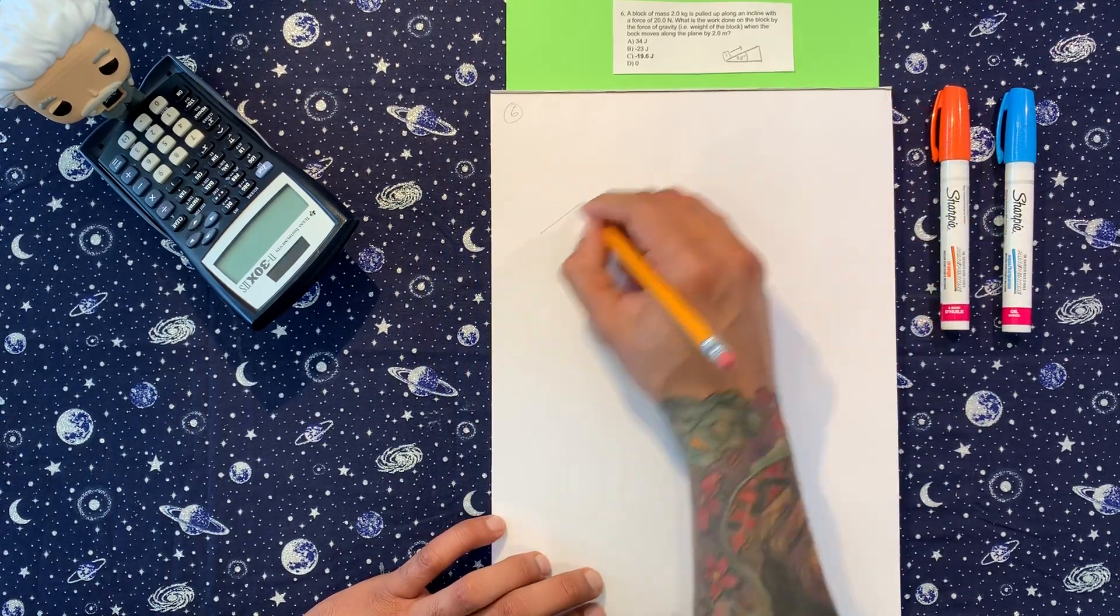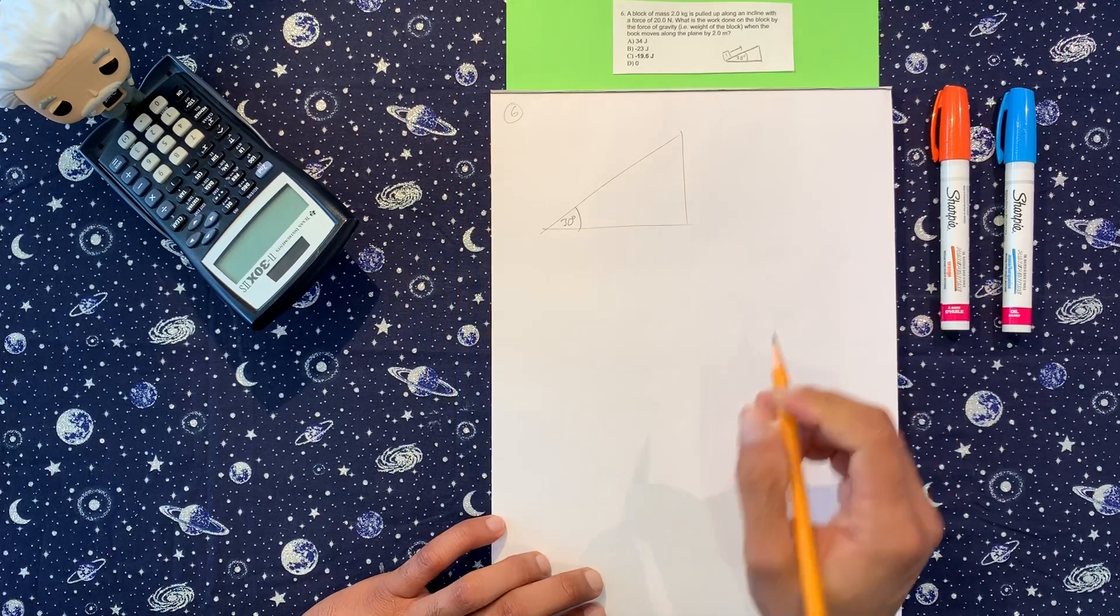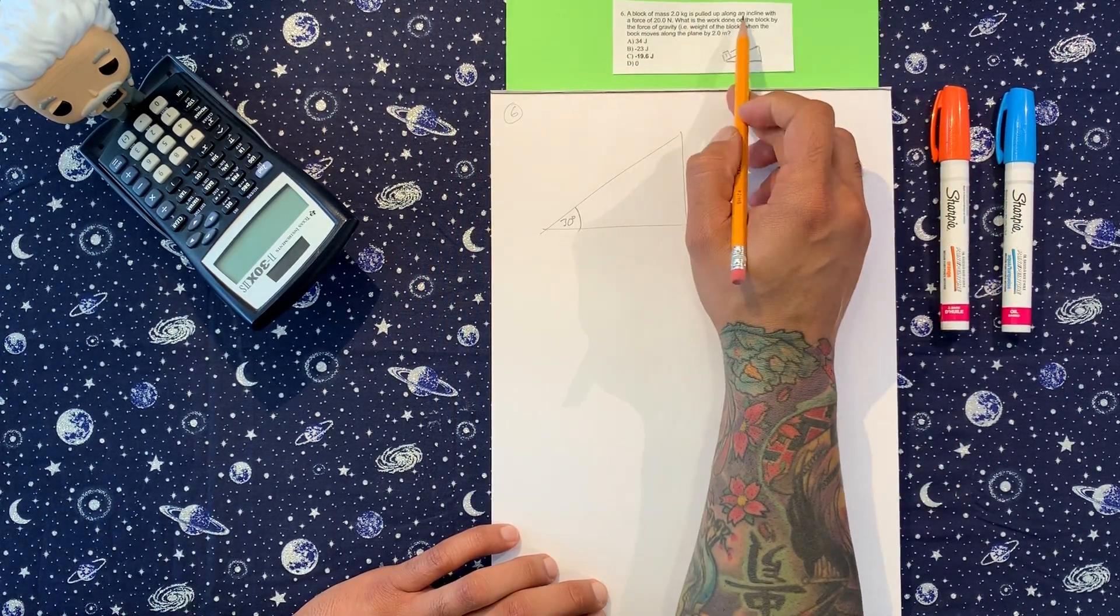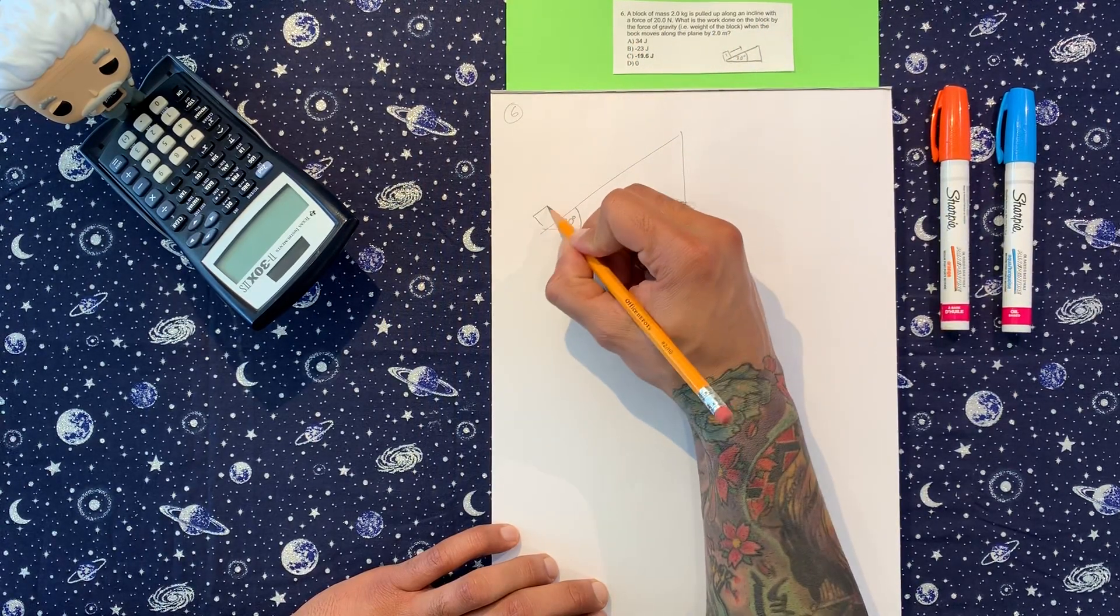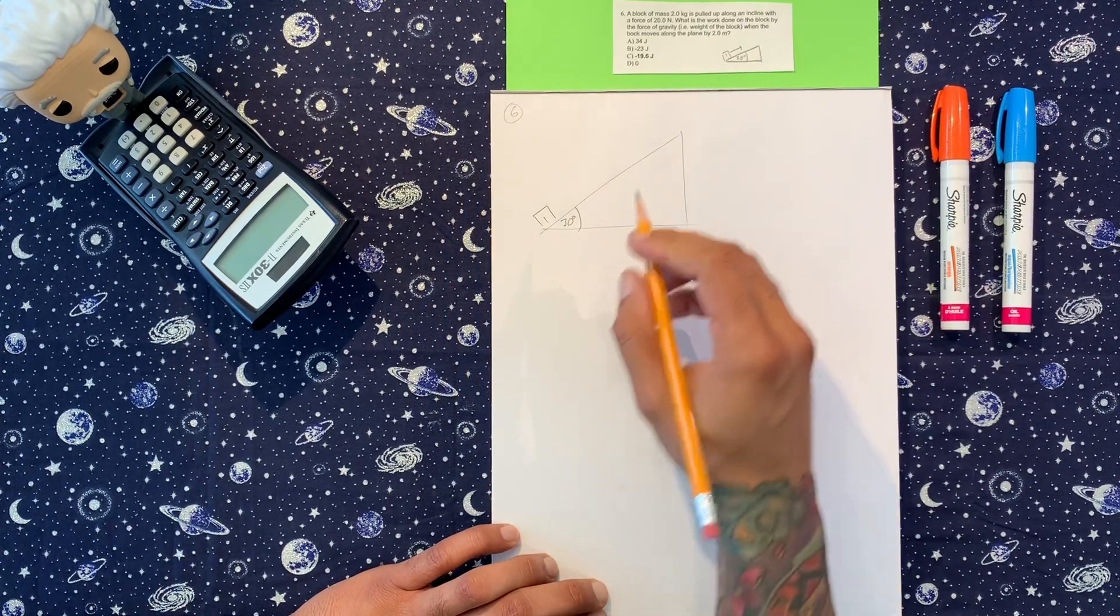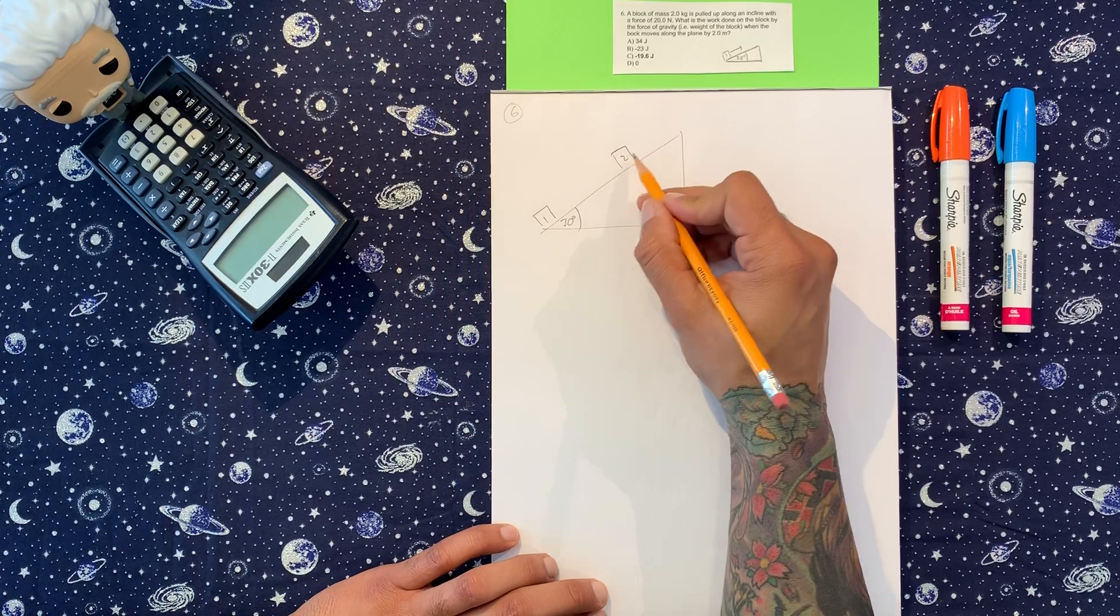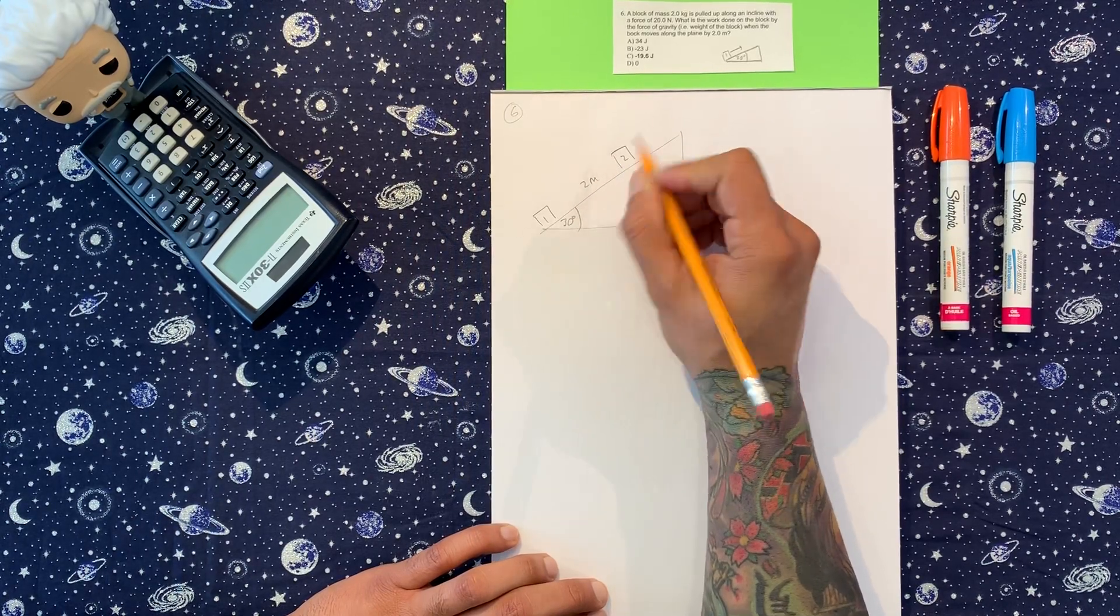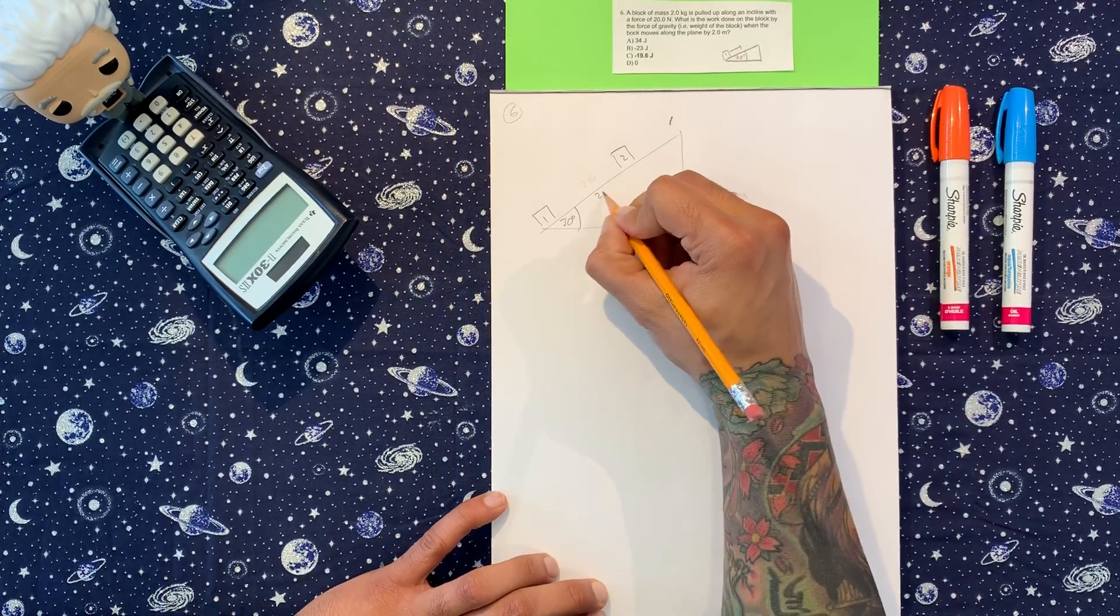So we have this picture, right, 30 degrees, and a block of mass 2 kilograms is pulled up along an incline plane at a force of 200 newtons. So we're going to say that initially we start here, I'm going to label it one, and then we're pulled up to around here. This is, now it's here, and this distance covered is two meters. Actually, let me put this two meters here. Two meters.